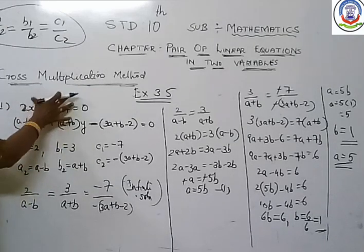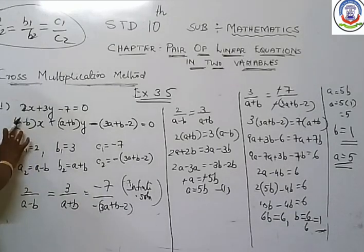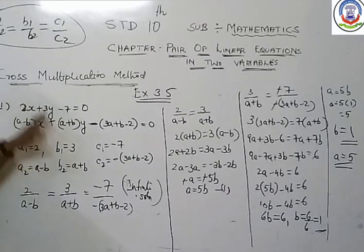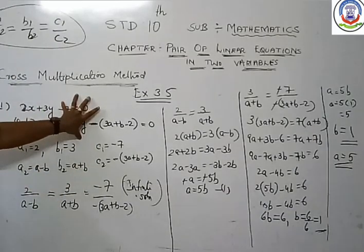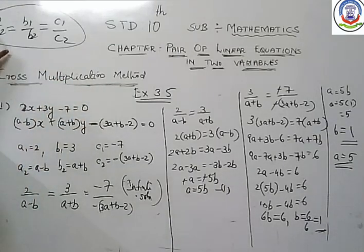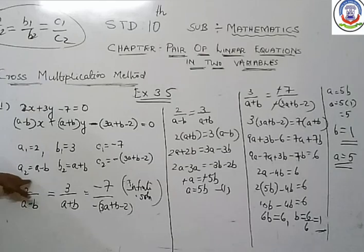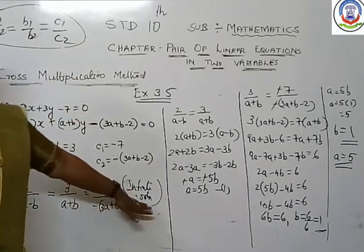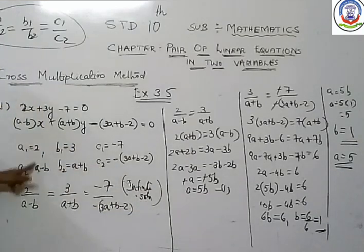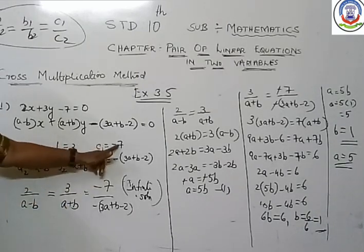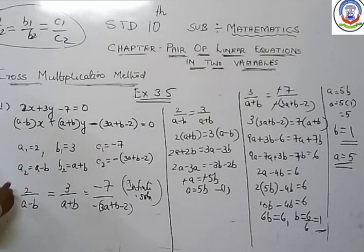The question is: for which values of A and B will this equation have an infinite number of solutions? You have separated the coefficients of each variable and constant. Since the equation is already given to have infinite solutions, the condition is a1/a2 = b1/b2 = c1/c2. Now compare the ratios: a1/a2 = 2/(a−b), b1/b2 = 3/(a+b), c1/c2 = −7/(−(3a+b−2)). Since these must all be equal, equate the first two ratios: 2/(a−b) = 3/(a+b).